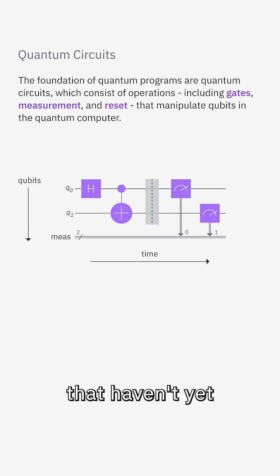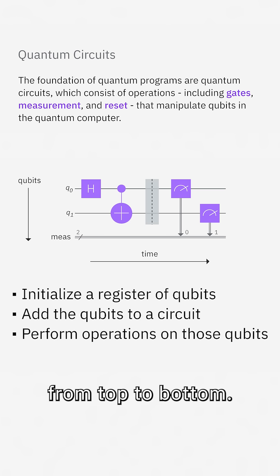Virtual qubits, meaning qubits that haven't yet been assigned to an actual physical qubit on a processor, are listed in increasing order from top to bottom.